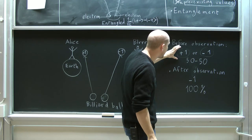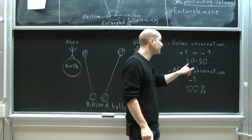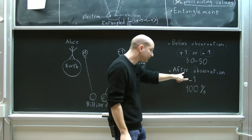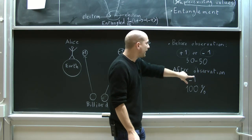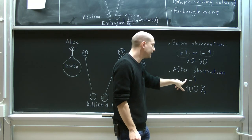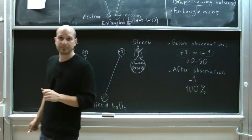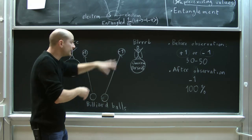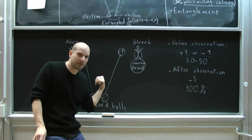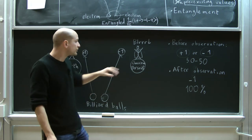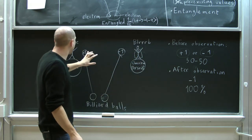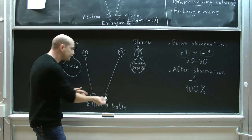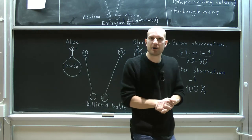Before Alice's observation, the ball was in a state where it was either plus one or minus one with 50-50 probability. Immediately after Alice's observation, Blurb's ball turns into a state where it necessarily is the minus one ball with 100% probability. However, what I just said is not mysterious in any way. The balls — we didn't know which one was which — but one was actually the plus one ball and the other was actually the minus one ball. So we managed to have this change of state that may seem non-local, but there's nothing non-local happening. It's just that each billiard ball had a pre-existing value for its marking.